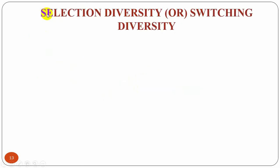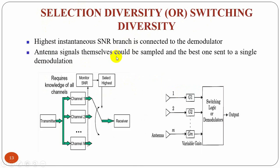The first type of receiver diversity is selection diversity, or switching diversity. Here we have M demodulators to provide M diversity branches whose gains are adjusted to provide the same average SNR for each branch. The receiver branch having the highest instantaneous SNR is connected to the demodulator. The antenna signals themselves could be sampled and the best one is sent to the single demodulator.